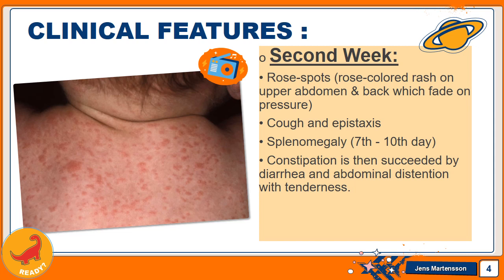Cough and epistaxis may be present. Splenomegaly occurs on the 7th to 10th day after infection. Constipation is then succeeded by diarrhea, which is mostly pea-soup — that is, yellow-colored diarrhea — and abdominal distension with tenderness also occurs.